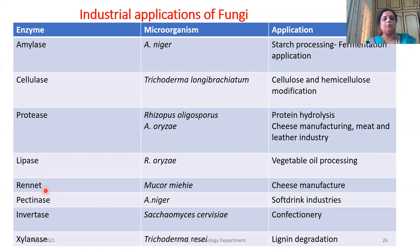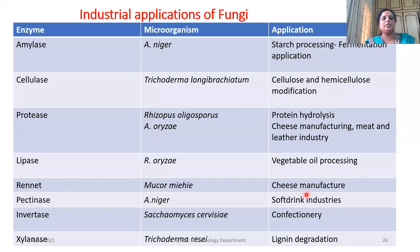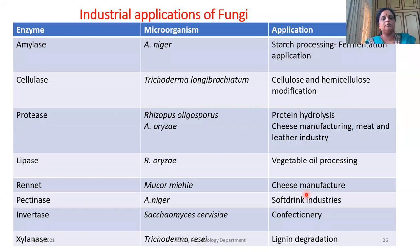Rennet is an enzyme extensively found in the alimentary canal of ruminants. Certain fungi — for example, Mucor miele — have an ability of producing rennet. This rennet has been extensively used in cheese-making industries, especially in cheese manufacturing. Rennet has the ability of breaking down casein, which is an important substance present in milk. Curdling happens by this particular enzyme called rennet, and Mucor species has been extensively used in industries for this purpose.